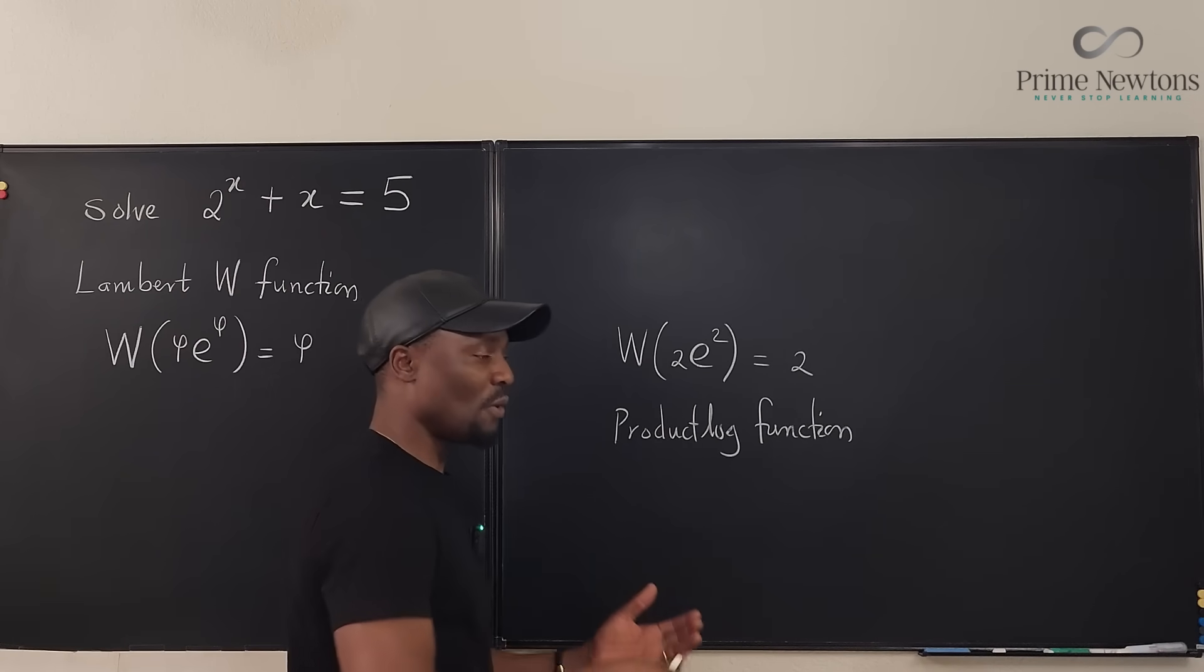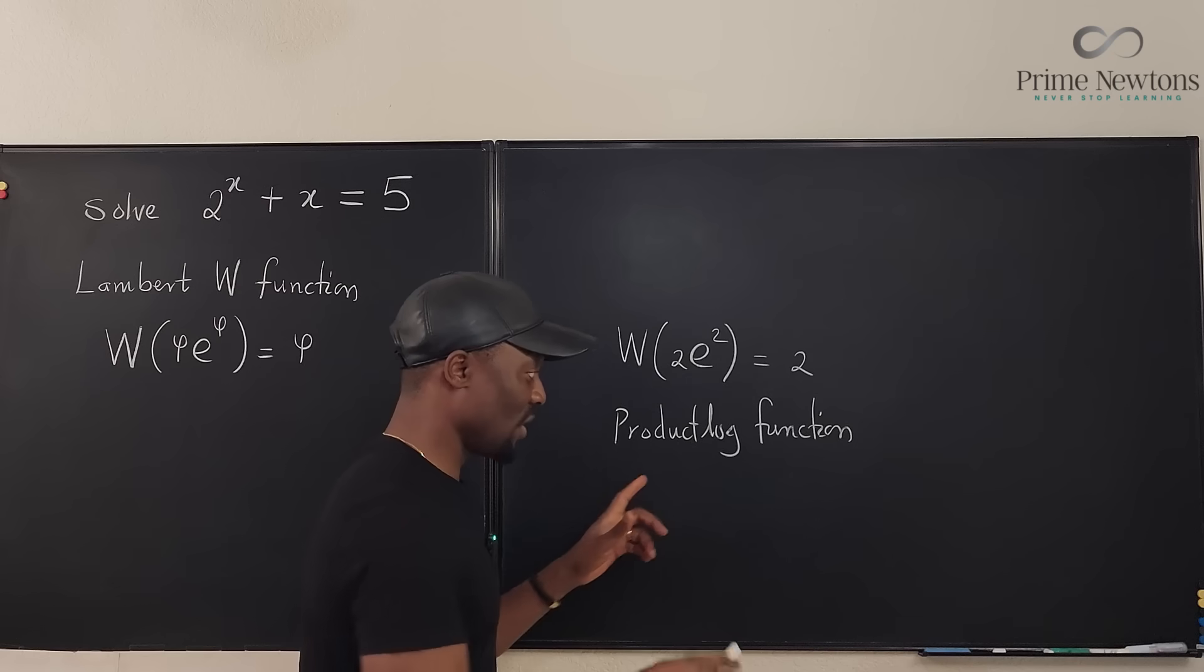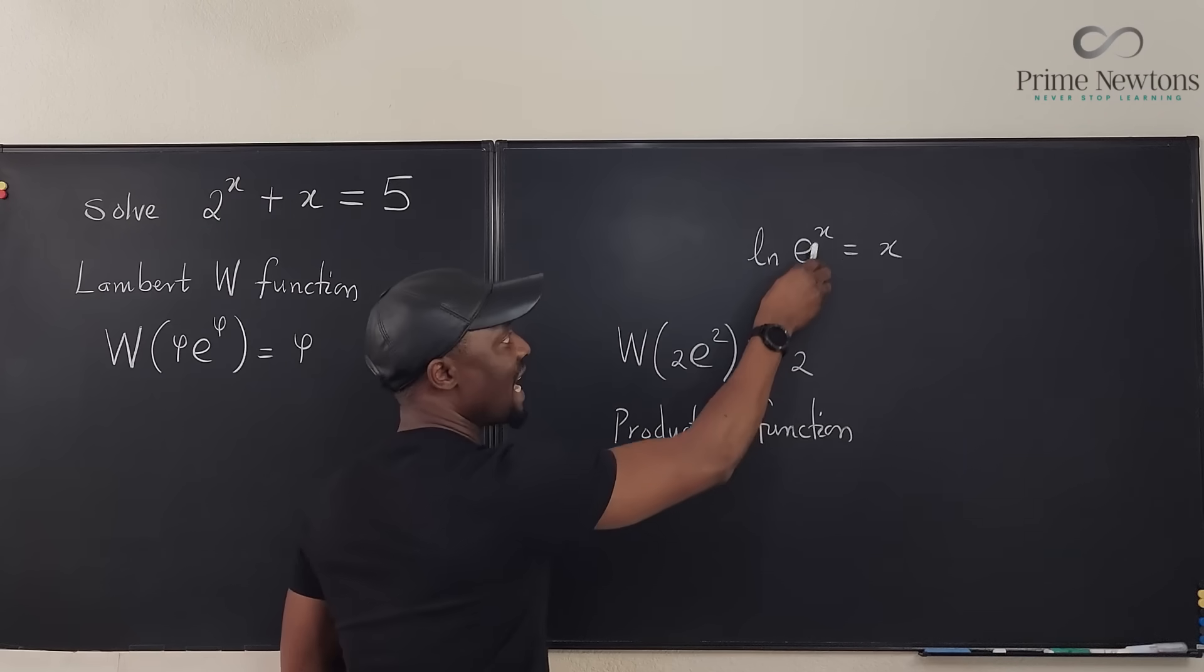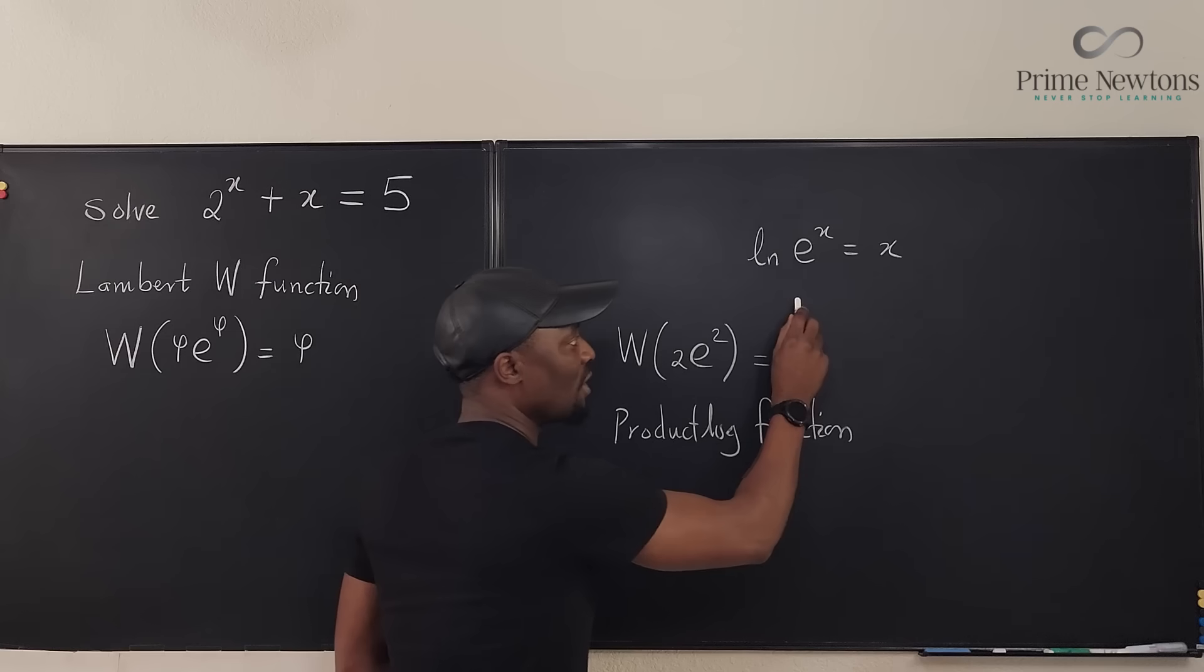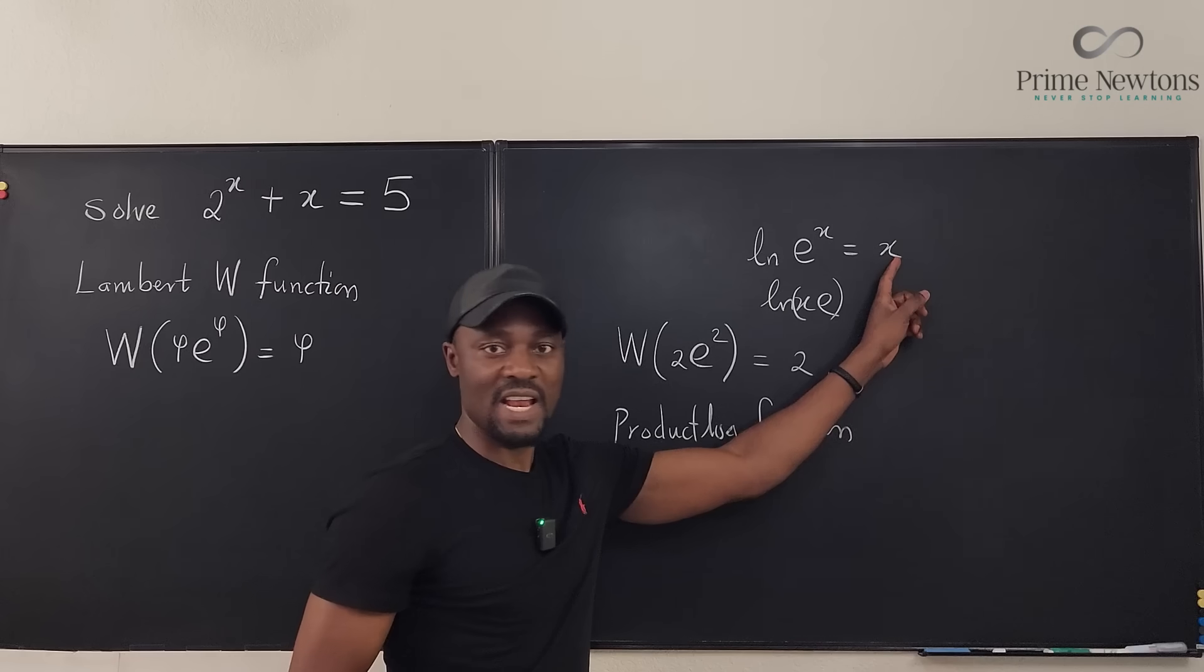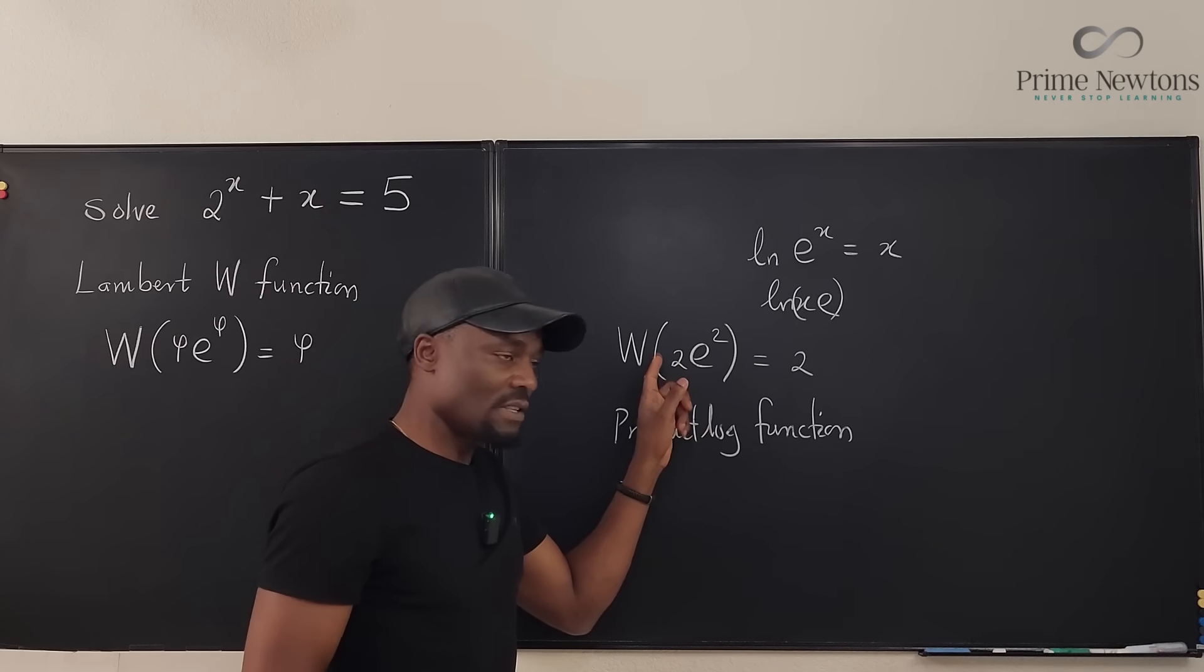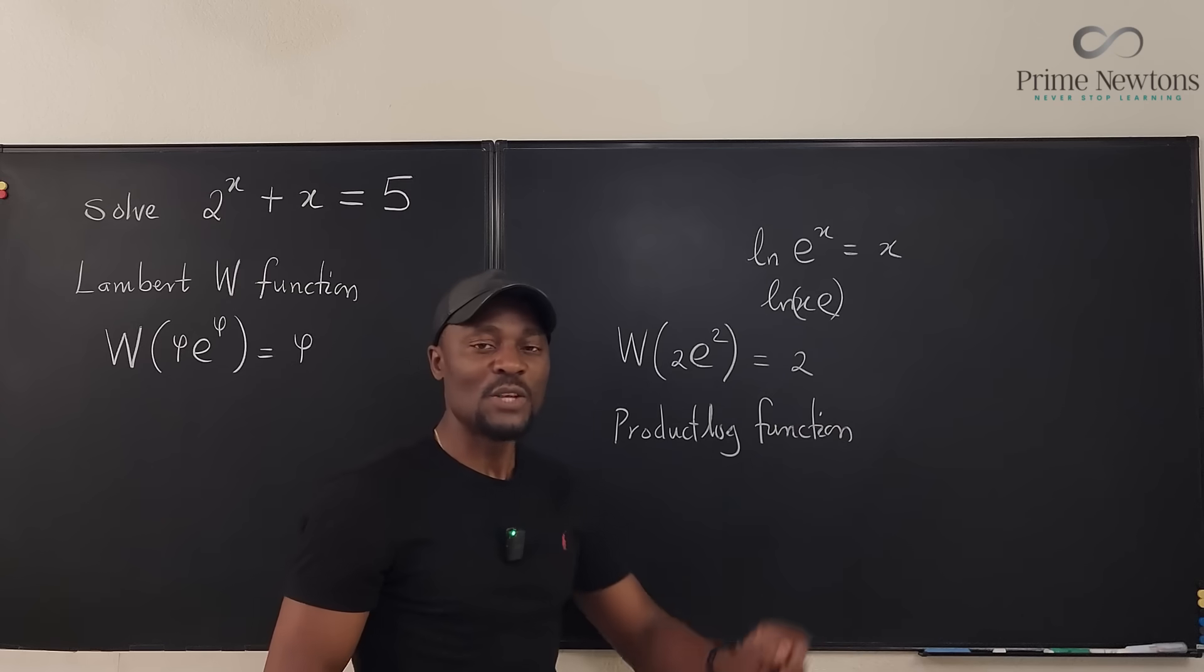So if you want to use the function, it is most effective, just as the natural log of e^x equals x. If you want to plug in anything here so that you can get what is here, it has to look like this. You cannot plug in x times e into natural log and expect to get x. This is not the correct format. The correct format that works in the Lambert W function is something e to something, and then you're going to get something back.